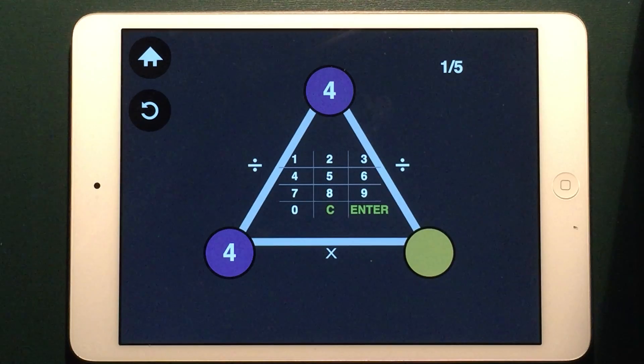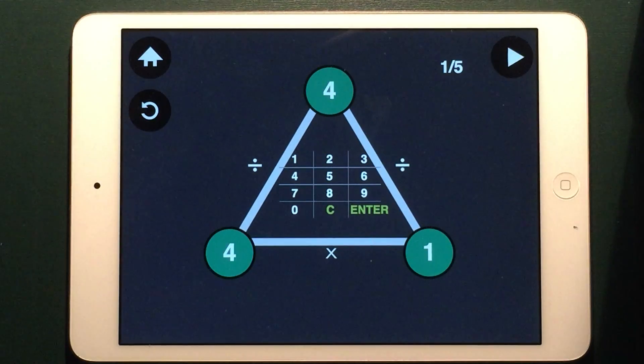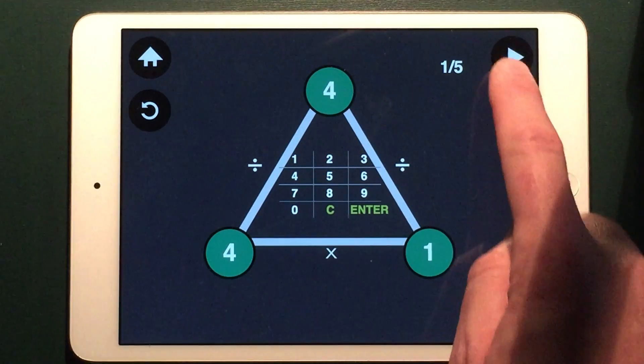In Practice mode, two of the circles are filled in, and you need to fill in the third. Again, if the circles are green, you've done it correctly.